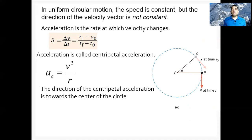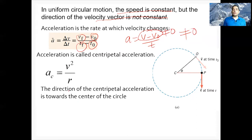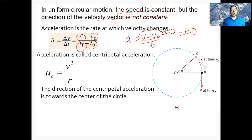Now let's talk about acceleration in uniform circular motion. The speed is constant but velocity is not constant. If velocity is not constant, there is acceleration — since a = (v_f − v₀)/(t_f − t₀), and velocity is not constant, acceleration is not zero. So if acceleration is not zero, what is its value?